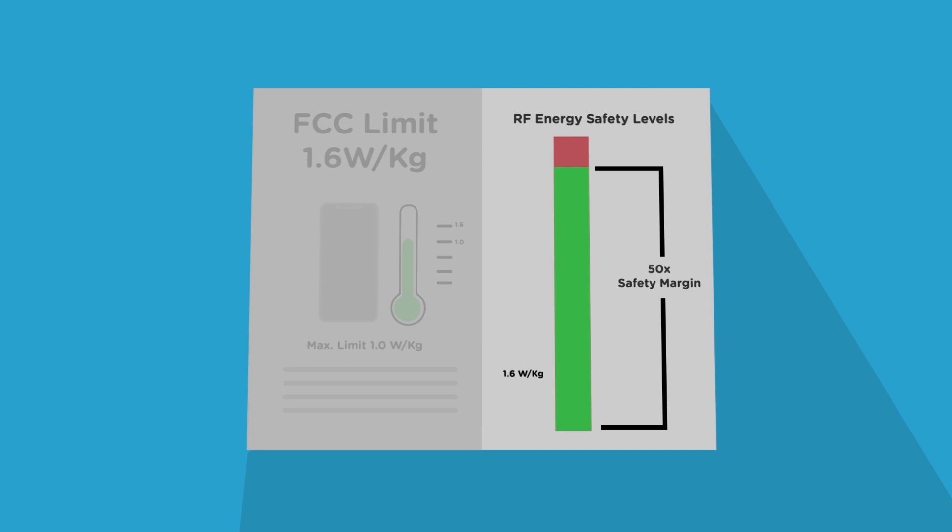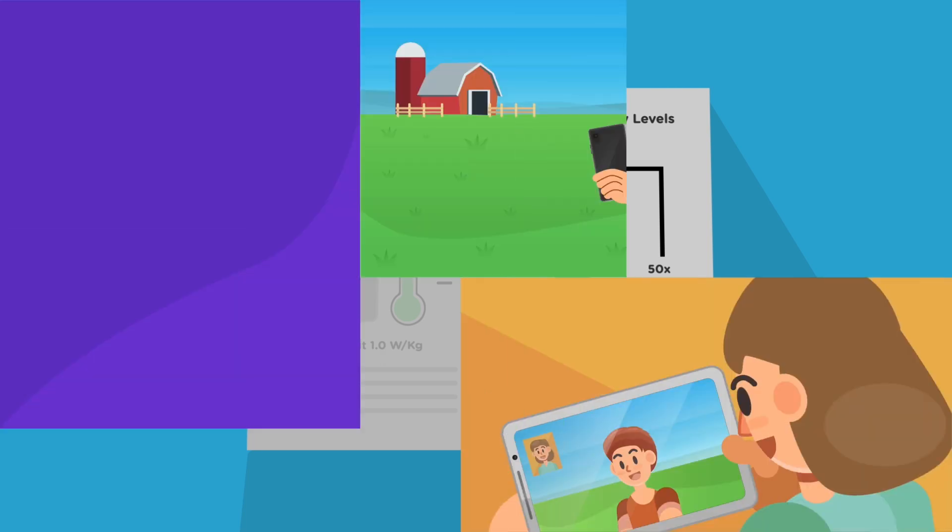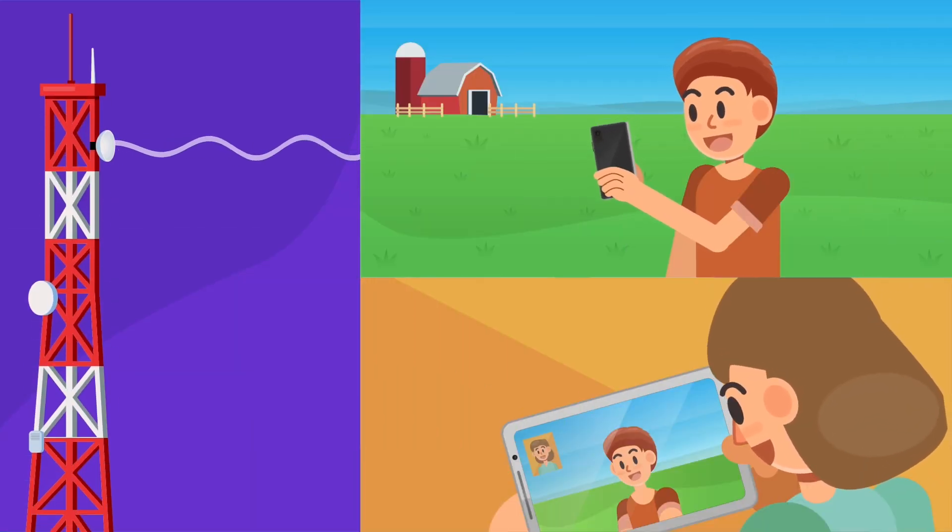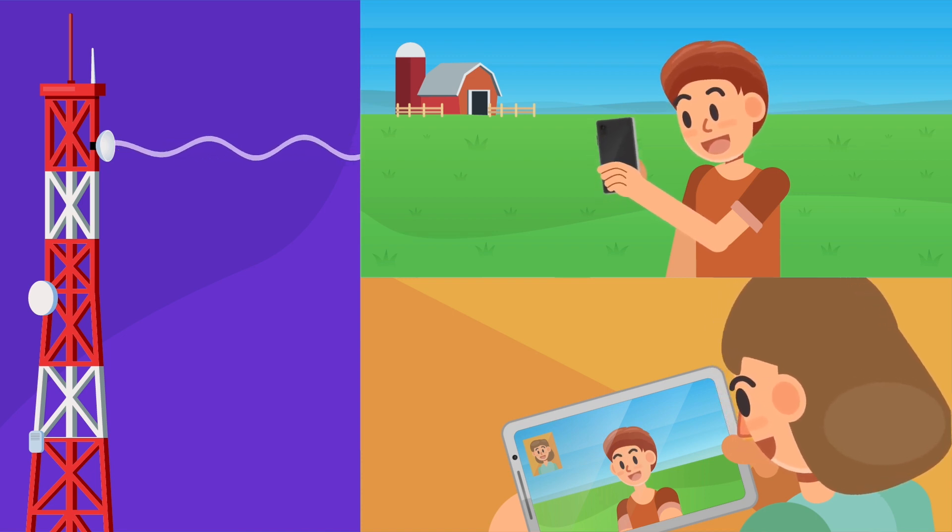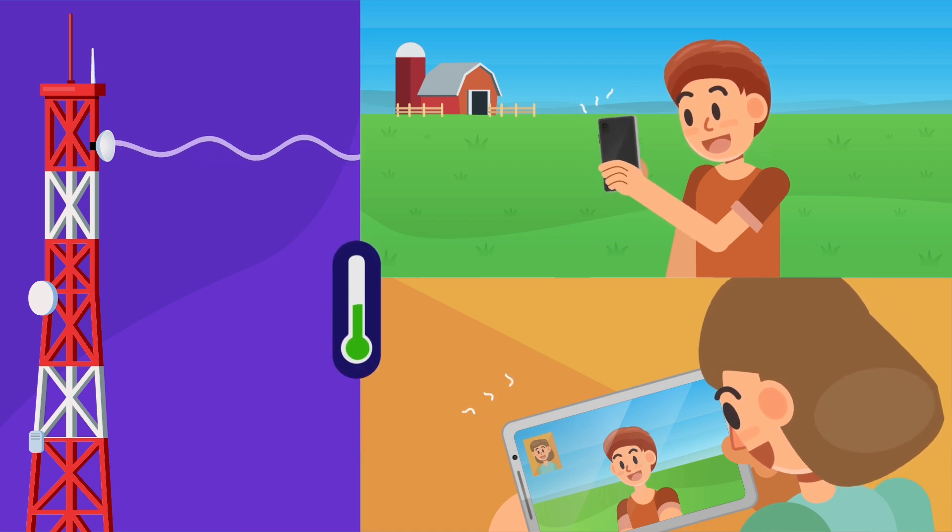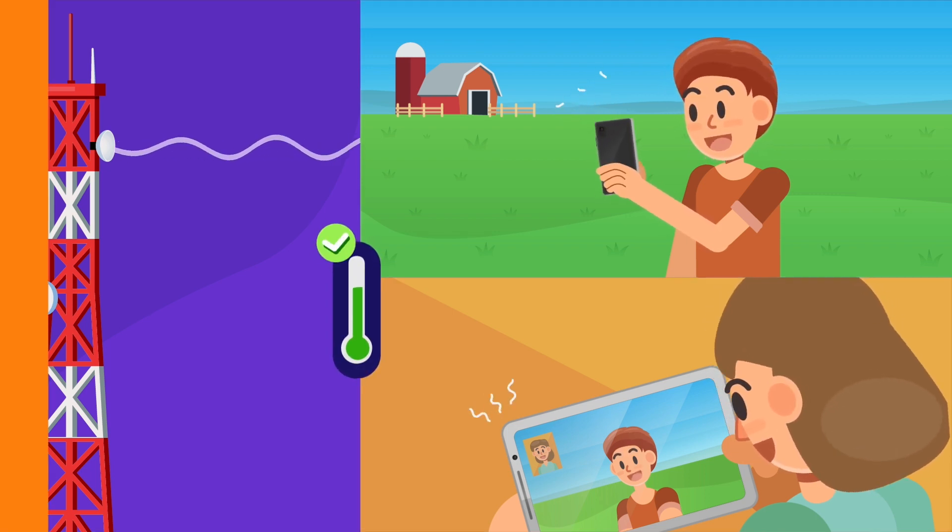You can feel good that even if you use your phone or tablet or watch in a worst case scenario, like on a farm far away from a cell tower, your phone's at max power trying to reach the cell tower, you're well below the levels that can potentially cause harm.